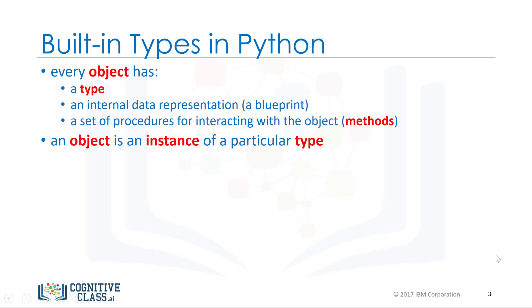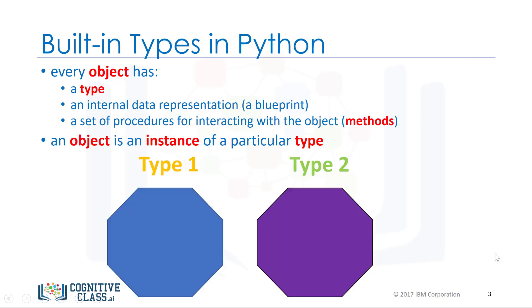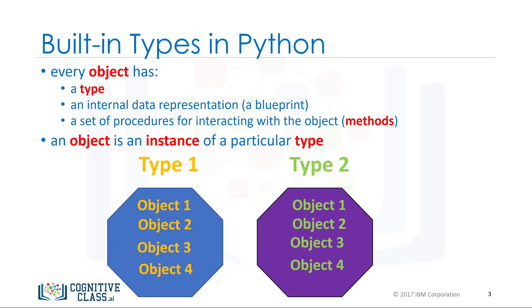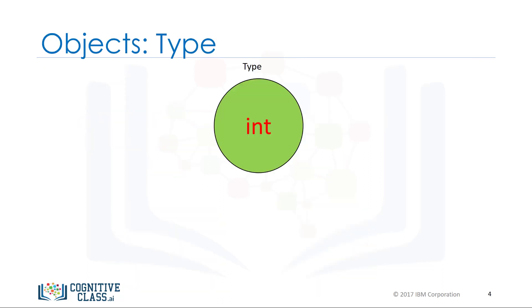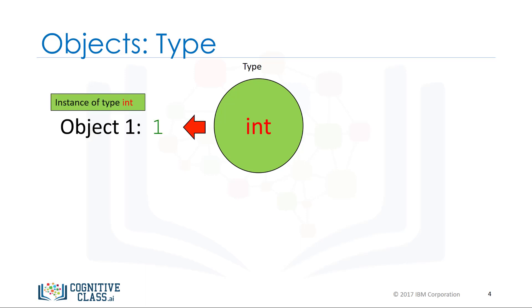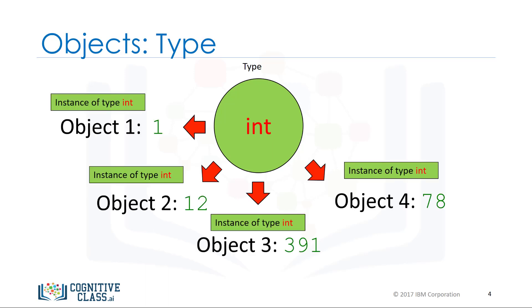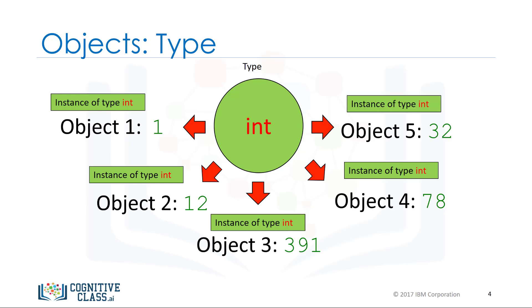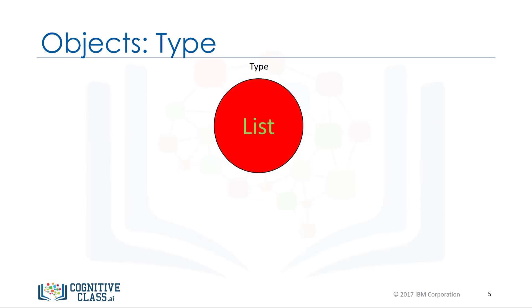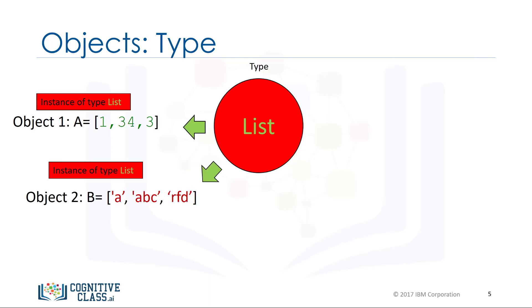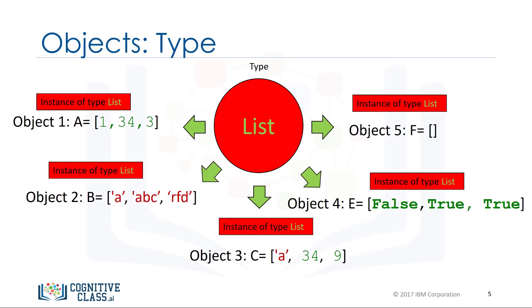For example, we have two types: type 1 and type 2. We can have several objects of type 1, shown in yellow — each object is an instance of type 1. We also have several objects of type 2, shown in green — each object is an instance of type 2. Every time we create an integer we are creating an instance of type integer, or an integer object. In this case we are creating five instances of type integer, or five integer objects. Similarly, every time we create a list we are creating an instance of type list, or a list object — in this case five list objects.